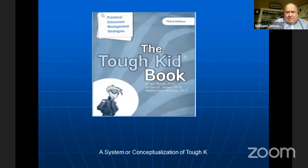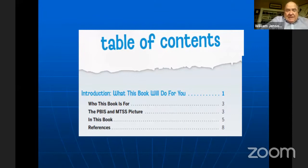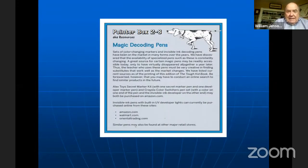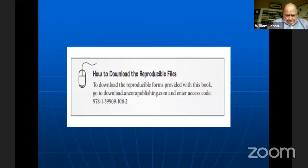Moving on to the Tough Kid Book itself — remember, this is a book of conceptualizations and a system, but it also has basic intervention techniques. The introduction explains how it fits into PBIS/MTSS. Each chapter has embedded 'pointer boxes' that refer you to outside resources — not just Ancora's, but broadly available resources — pointing you to related tools and research.